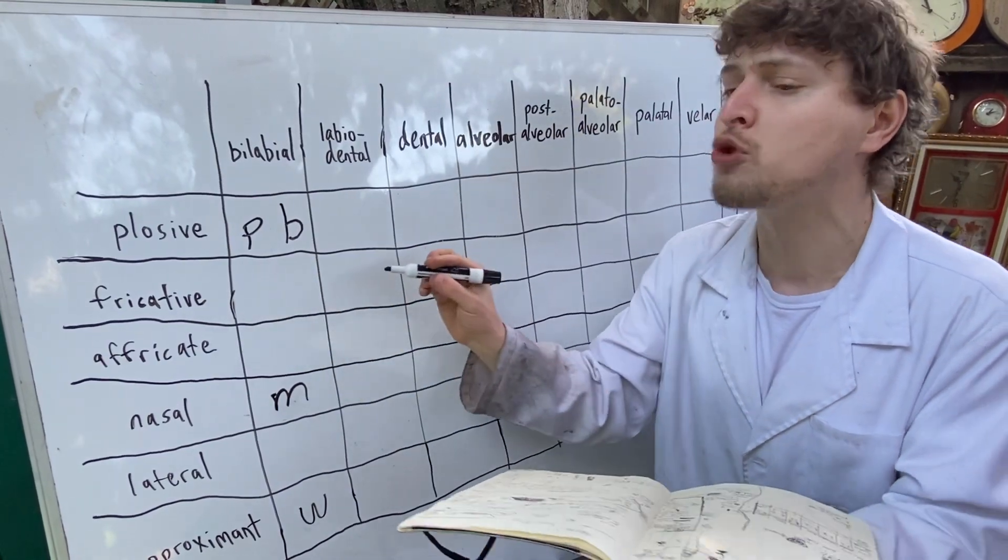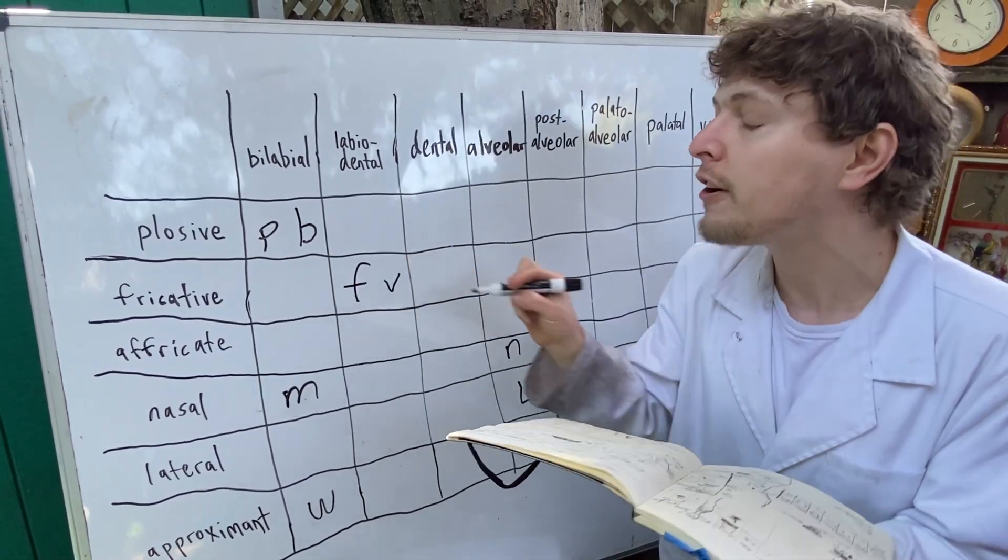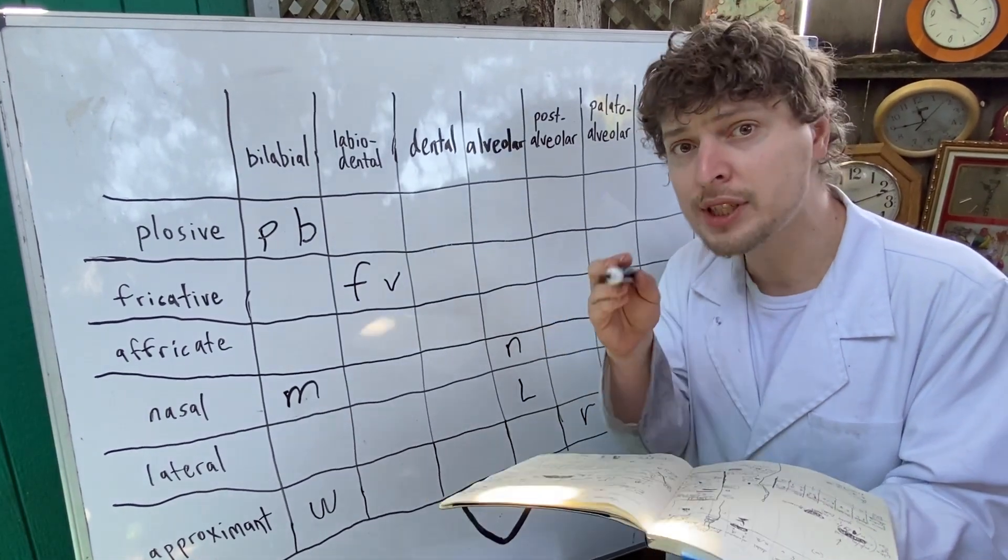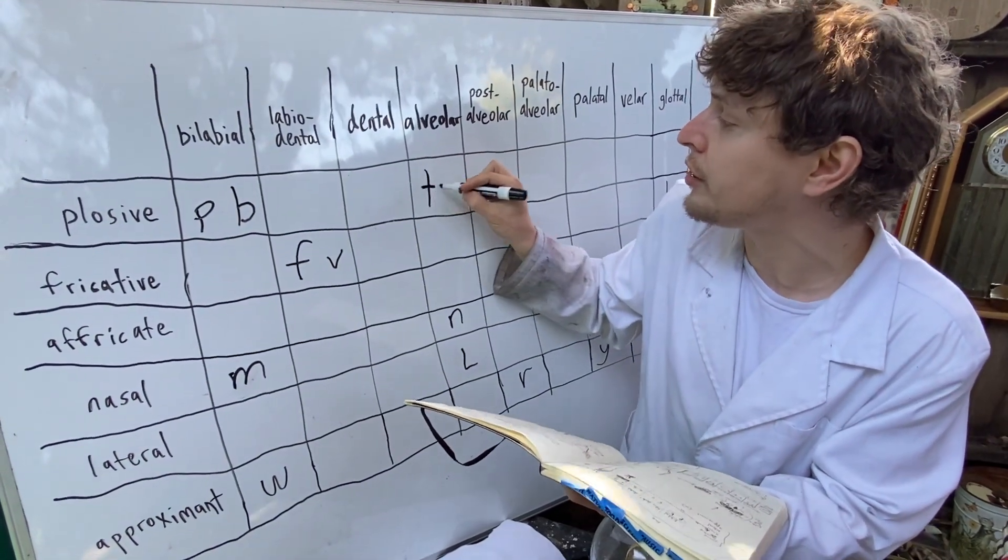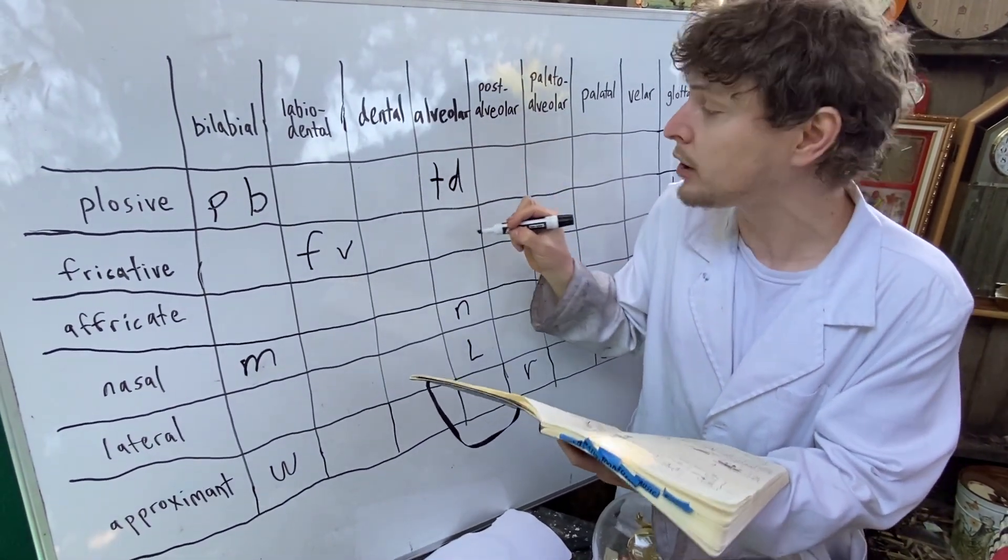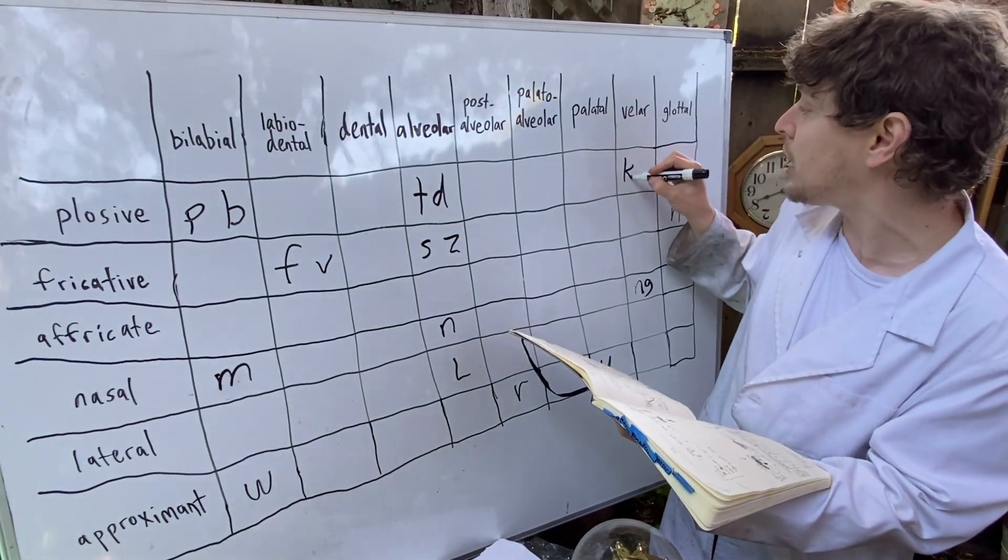Our next box-sharing couple is going to be our labiodental fricatives: F and V. Once again, make those sounds, see how similar they are. Here in alveolar, we got the pair T, D. We also got the pair S, Z. And our velar plosive would be K, G.